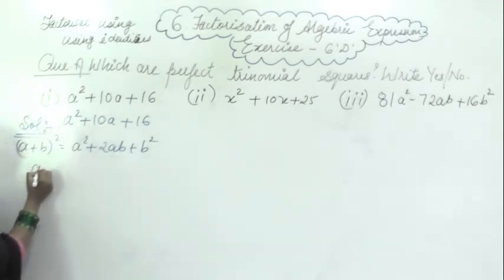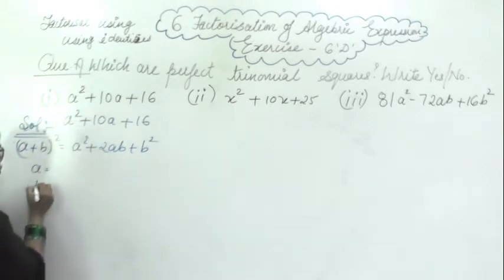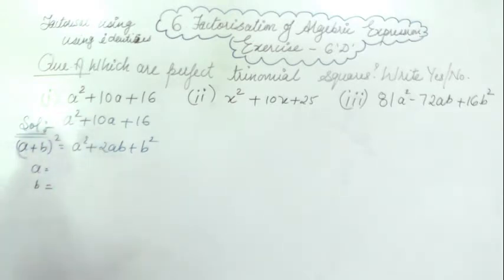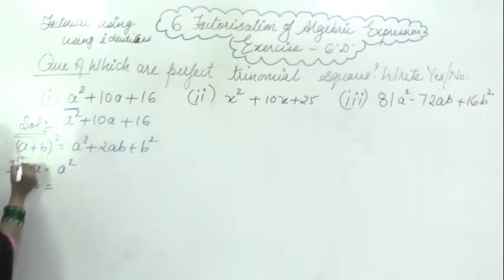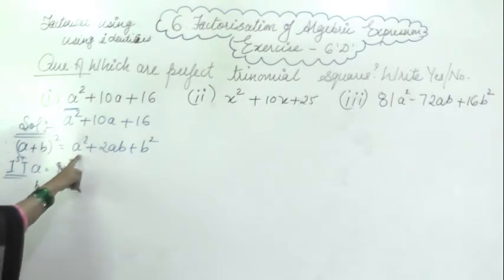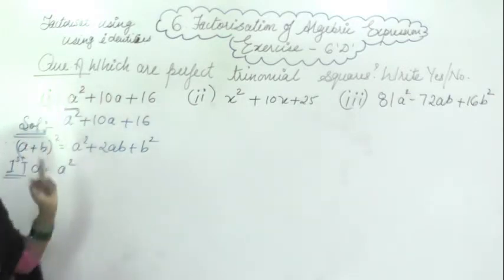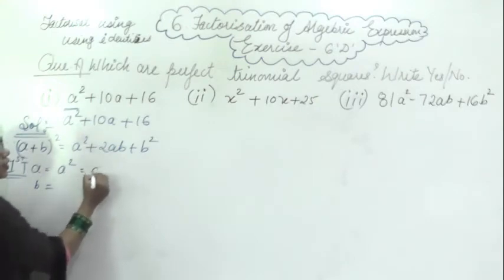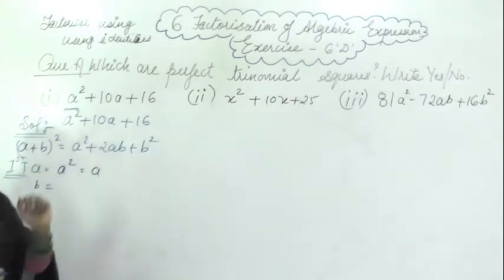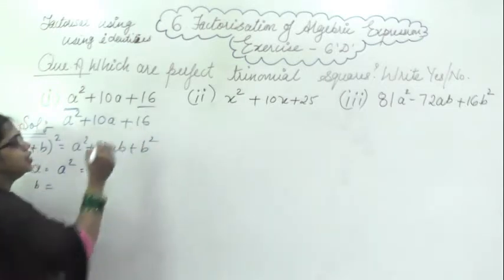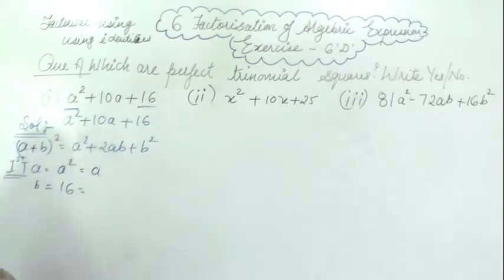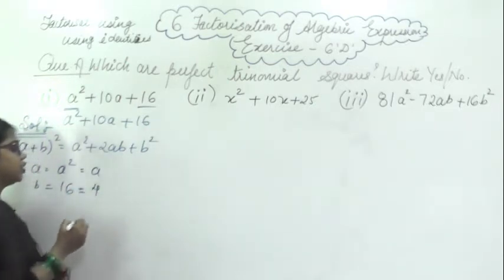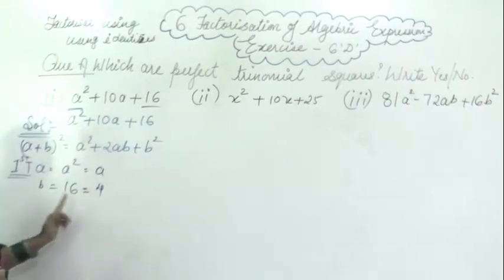From here, what is A and what will be B? A will be such that the number should be the perfect square. The first term is A square — A into A is A square, so A is the perfect square of A. Similarly the third term is 16, which is the perfect square of 4. So here A equals A and B equals 4.